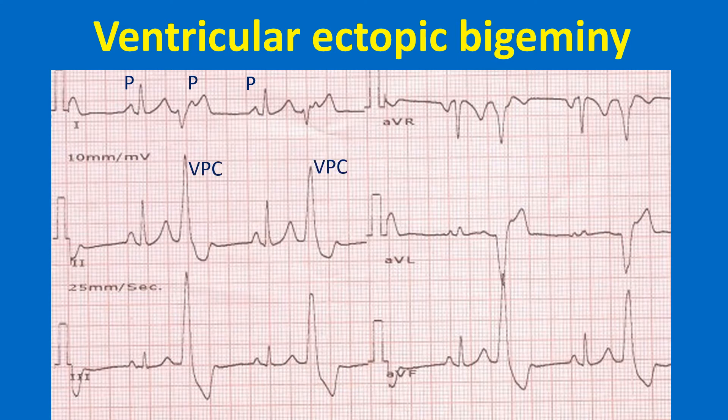In this tracing, P waves are seen as distortions in the contour of the ST segment of the ectopic beat. The distortion is exactly midway between the preceding and succeeding P waves of the sinus beats, which are of narrow QRS. Ventricular ectopics are characterized by wide, bizarre complexes which are premature and not usually preceded by P waves.